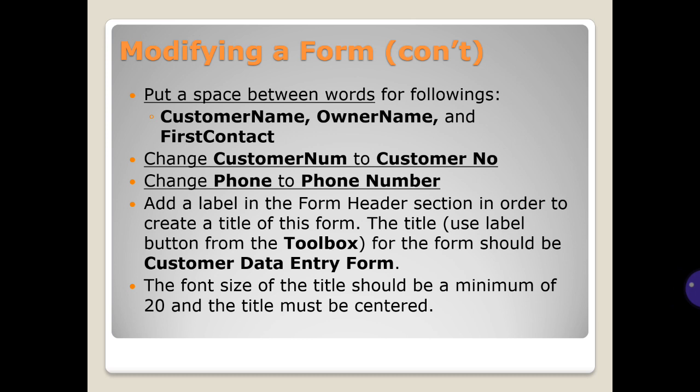Put a space between words for the following fields: customer name, owner name, and first contact. Change 'customer number' to 'customer and all', and change 'phone' to 'phone number'. Add a label in the form header section to create a title for this form. Use the label button from the toolbox. The title should be 'Customer Data Entry Form', the font size should be a minimum of 20, and the title must be centered.